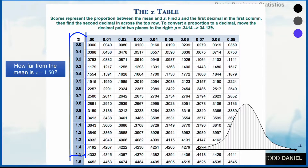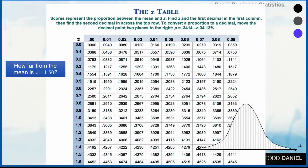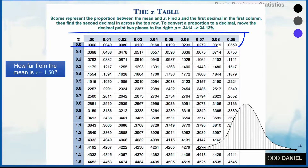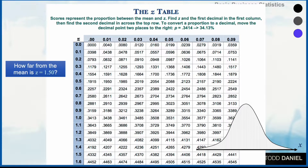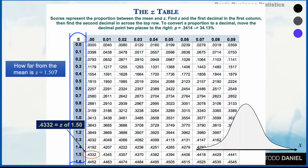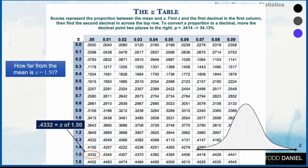Notice in the first slightly darker blue column underneath the z, we have values to one decimal point: 0.0, 0.1, 0.2, 0.3, and so on. Moving across columns, we can add a second decimal point. To find how far from the mean is z of 1.50, we move down the first column until we find 1.5. In the next column, we see a value of 0.4332, which tells us the probability of a z of 1.50 is 0.4332, or 43.32% of scores.